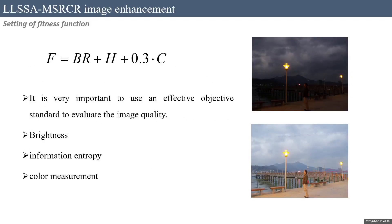It is very important to use an effective objective standard to evaluate image quality. In this paper, brightness, color measurement, and information entropy are selected as the objective function to measure image quality. BR represents the image brightness, and the calculation of image brightness is very important. Second, to enhance the color of the image, reflecting the vividness — for the enhanced low luminance image, higher vividness indicates that the image is more consistent with human perception. Thirdly, information entropy is selected as a performance indicator to evaluate the image quality; image information entropy represents the amount of information contained in the image.